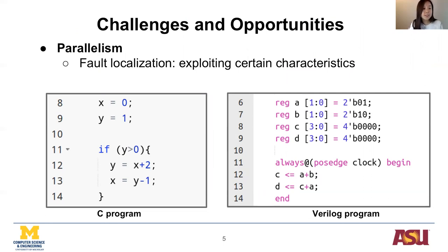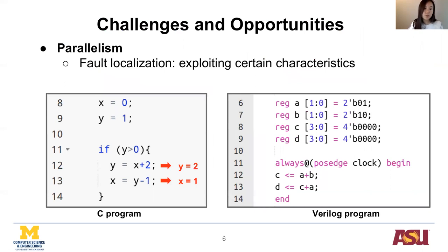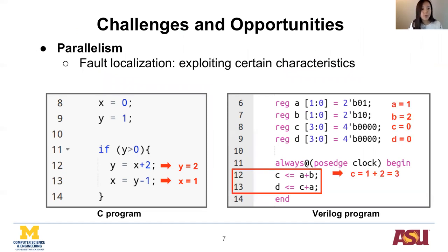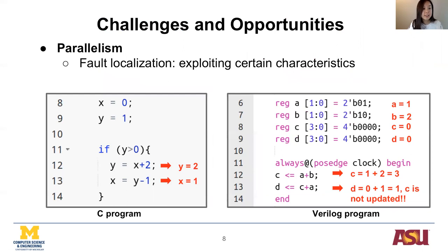For example, in the C program here, after execution, Y is equal to 2 on line 12, then on line 13, X is updated to 1. However, in the Verilog program, lines 12 and 13 are executed in parallel. On line 12, C will be updated to 3, but on line 13, C is not updated by line 12 yet, so D is assigned to 1 instead of 4.